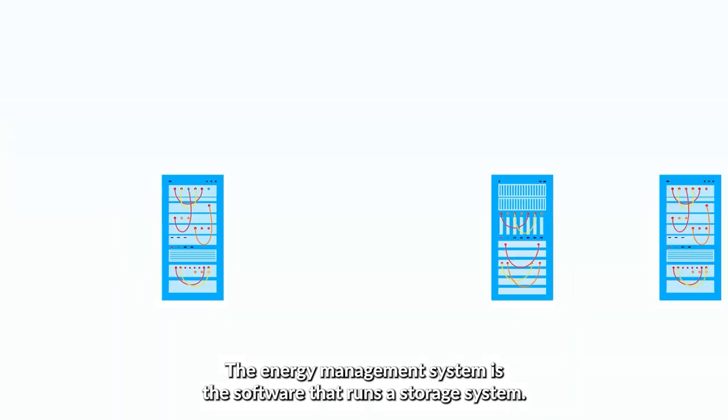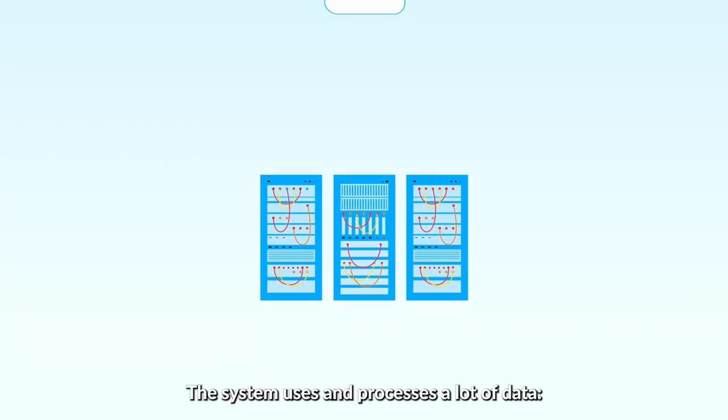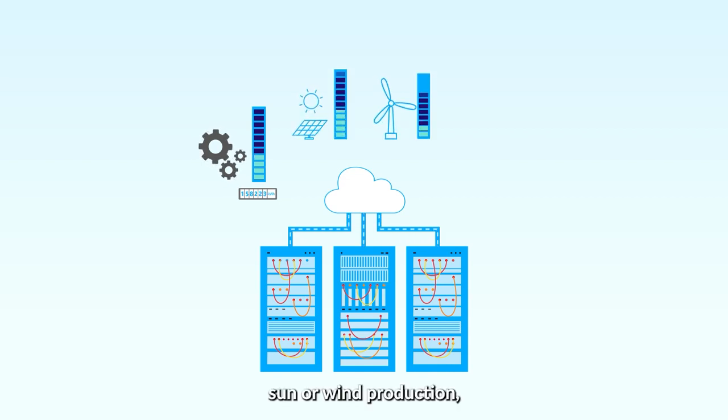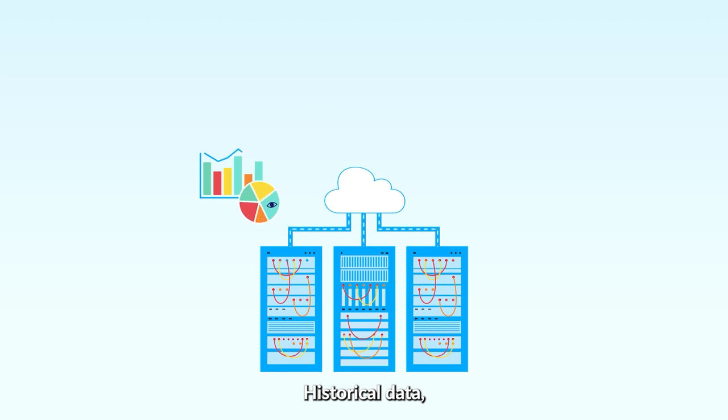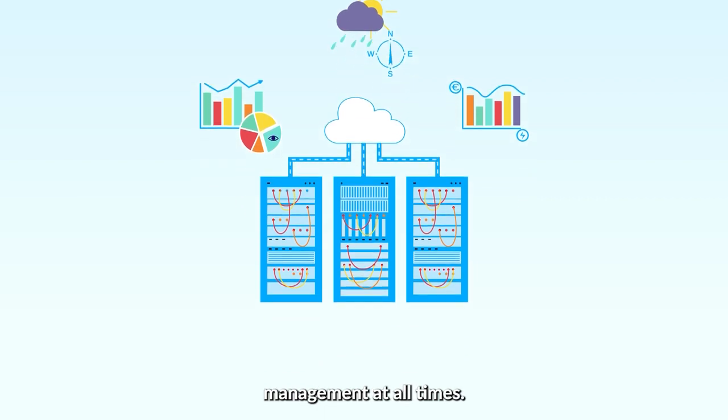The energy management system is the software that runs a storage system. The system uses and processes a lot of data: real-time consumption data, sun or wind production and battery status. Historical data, weather forecasts, and current market prices are also used to ensure optimal battery management at all times.